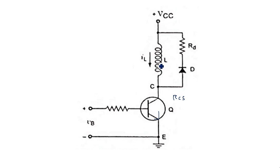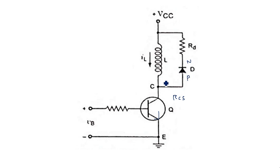When the input goes low and the transistor comes into the OFF state, the previously charged coil discharges. During the ON period of Q, the diode is in the OFF state because current flows directly downward and does not enter the P-type terminal of the diode. When the transistor turns OFF, the diode comes into the ON state as the inductor current now flows through it.